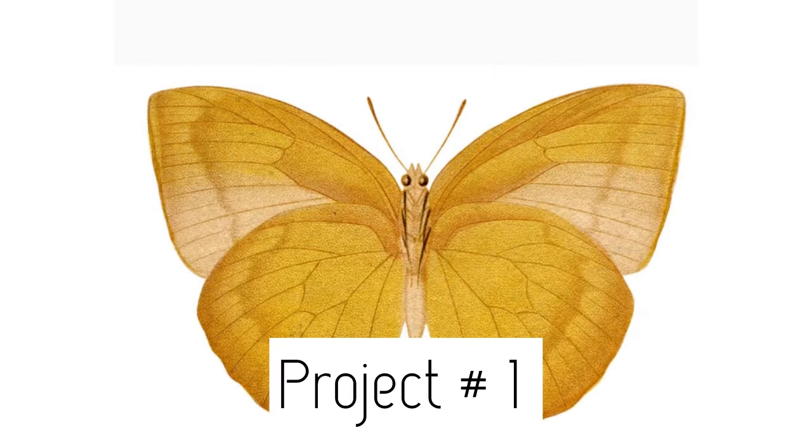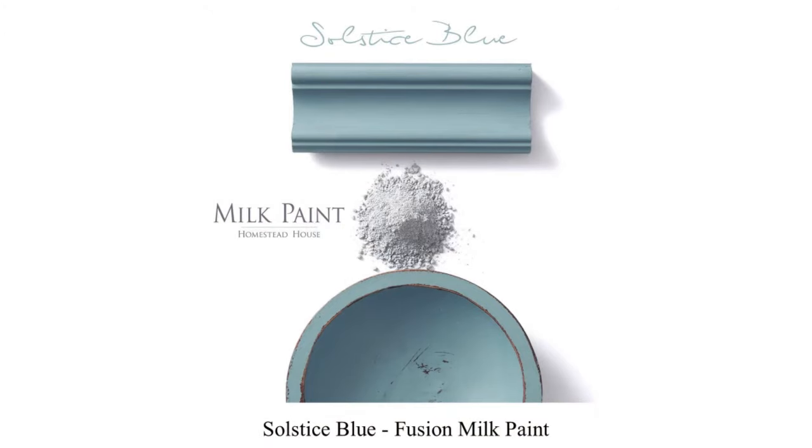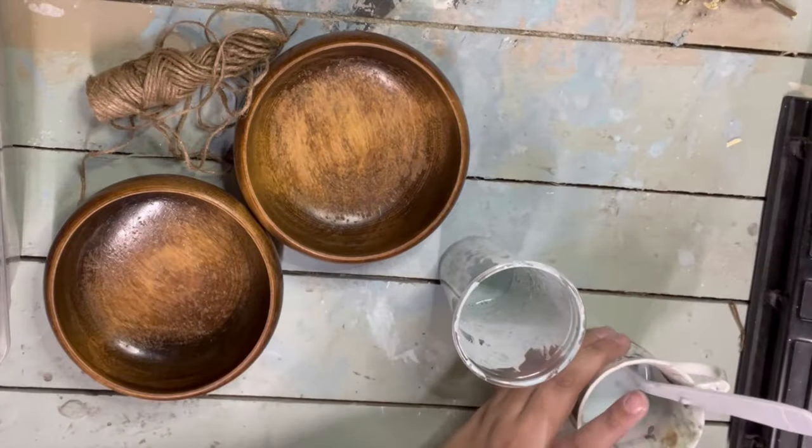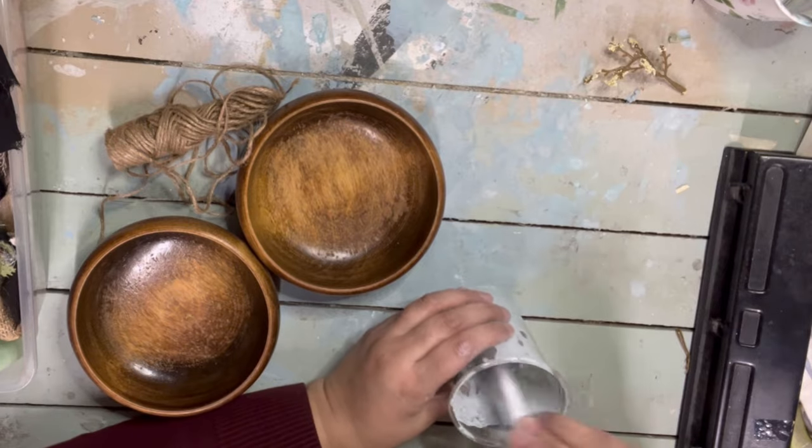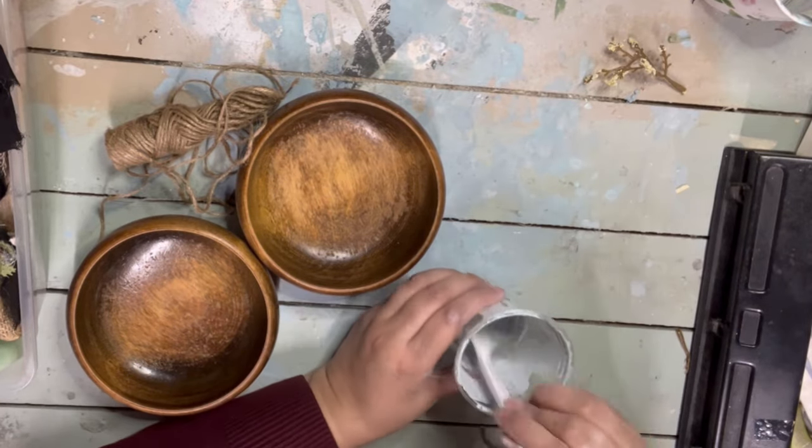Project number one, we're going to jump in here with some wood bowls and coming in with the Solstice Blue milk paint. We are going to mix that. This milk paint comes in a powdered form and it's a one-to-one ratio of powder to water.